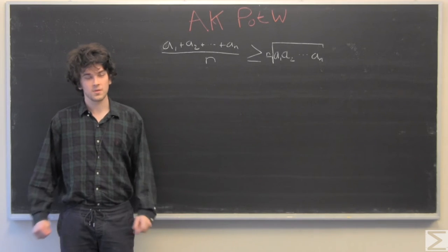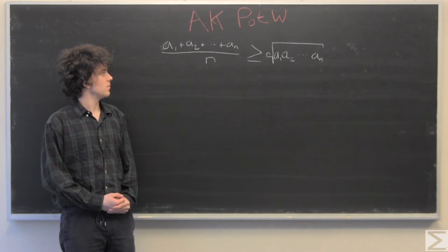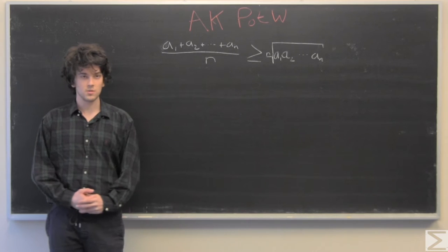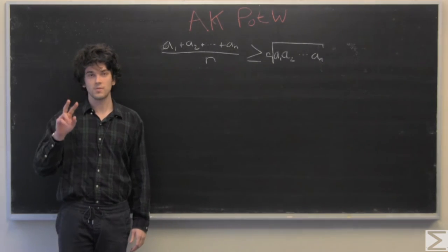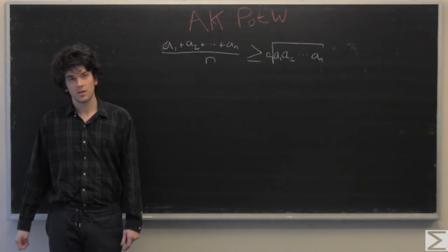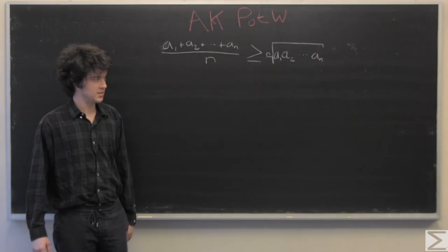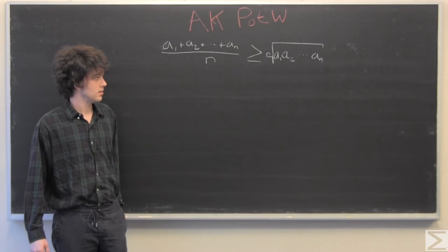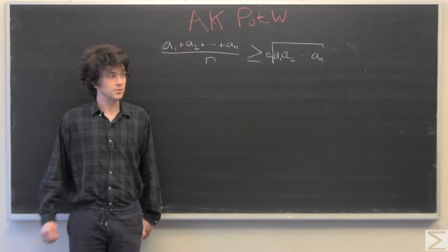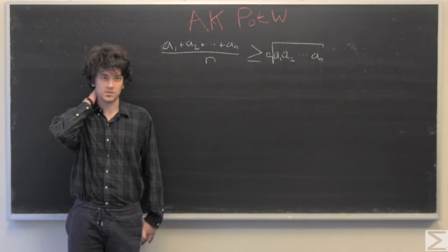We're only going to do this for the cases where n equals 2 and n equals 3, meaning only when we have two values or three values. That will make it a lot easier as the inductive proof to prove it in the general case is fairly messy.